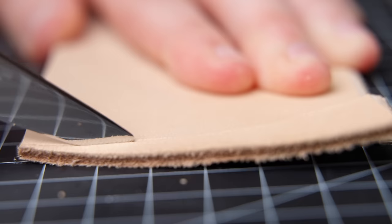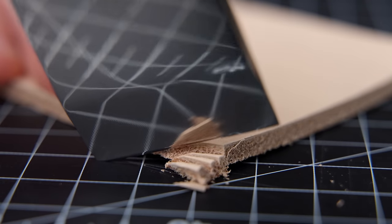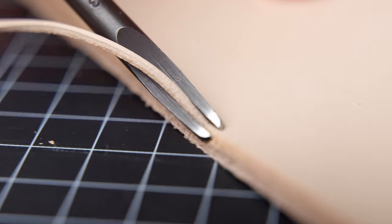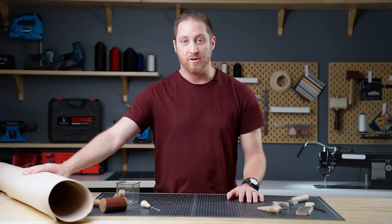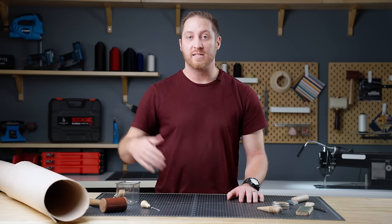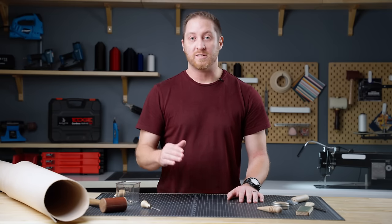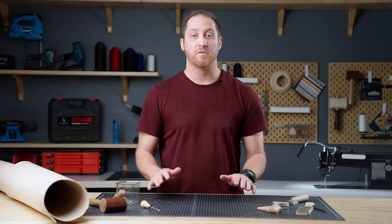It's called vegetable tan because of the process that undergoes turning a cowhide into leather. It uses natural tannins found in plants and trees. Because of this natural process, the leather is gonna appear lighter in color, but over time it's gonna develop a nice patina. We're using vegetable tan leather because it's long-lasting, durable, and very high quality, so it'll be perfect for our tote bag.